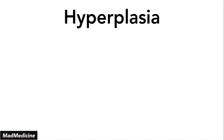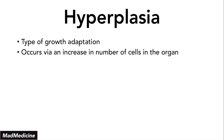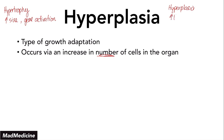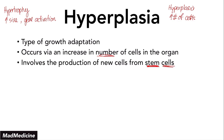Now compare that to hyperplasia — a completely different type of growth adaptation, even though the end goal is the same: to handle the amount of stress being placed upon an organ. Hyperplasia is a type of growth adaptation that occurs via an increase in the number of cells. To summarize: hypertrophy is an increase in the size of the cell via gene activation, whereas hyperplasia is an increase in the number of cells via production of new cells from stem cells.